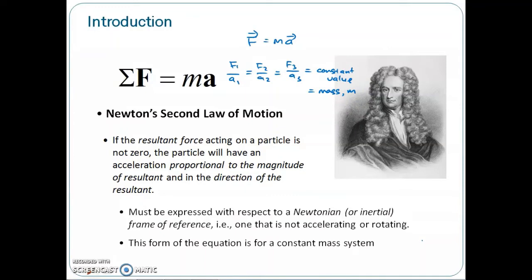If the force acting on the particle is zero, the particle will not accelerate — it will remain stationary or continue in a straight line at constant velocity. When a particle is subjected to several simultaneous forces, the equation F = MA becomes summation of F equals MA, where the summation F represents the sum or resultant of all the forces acting on the particle.